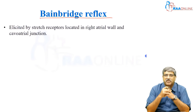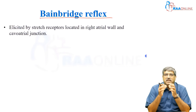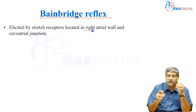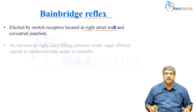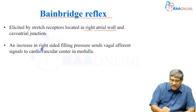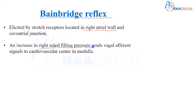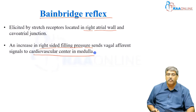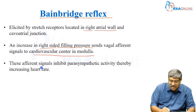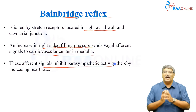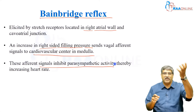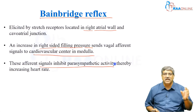Coming to Bainbridge reflex, this is elicited by the stretch receptor which is located in the right atrial wall as well as at the cavo-atrial junction. An increase in right-sided filling pressure sends a vagal afferent signal to the cardiovascular center in the medulla, and this efferent signal inhibits the parasympathetic activity. Once parasympathetic activity is inhibited, your heart rate is going to go up — that is the reflex.